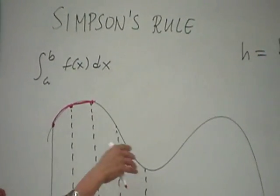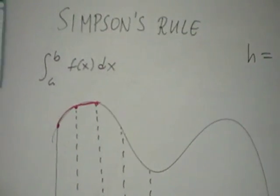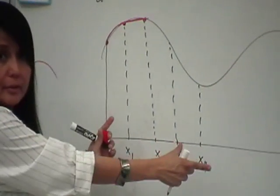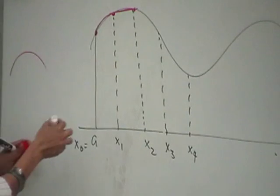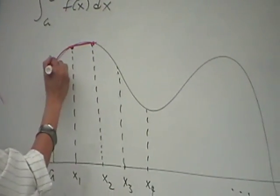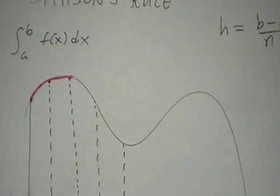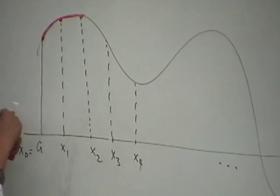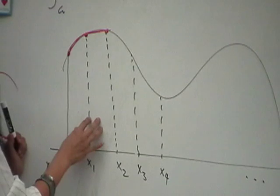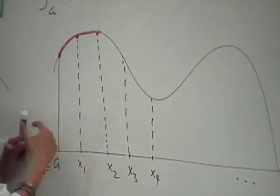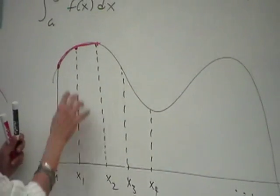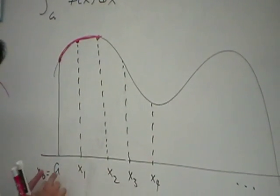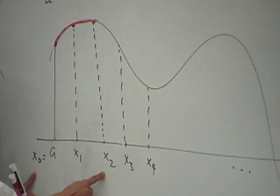What we want is to draw tiny parabolas for every two subintervals. It boils down to finding the area under the parabolic curve — the area from x₀ to x₂.